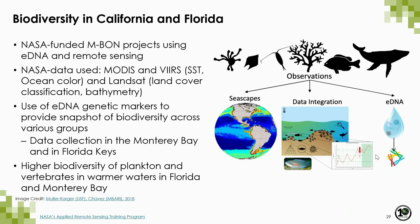While this is not a freshwater example, landscape genetics can be applied to many types of ecosystems, including the marine environment. I wanted to provide an example of a NASA-funded project focused on marine biodiversity — the Marine Biodiversity Observation Network. Many groups use NASA data such as MODIS and VIIRS to identify things like sea surface temperature, ocean color, and bathymetry, along with genetic markers to help identify the health of kelp forests and biodiversity along the Florida Keys and the California coast.